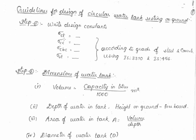These are design guidelines for a circular water tank resting on the ground. The first step is to write the design constants, which can be retained from IS 456. I have given you a table from IS 3370.